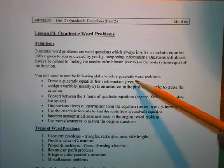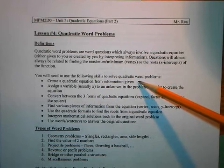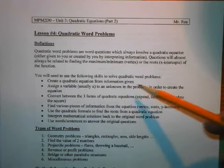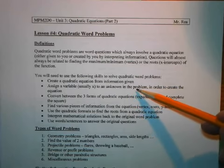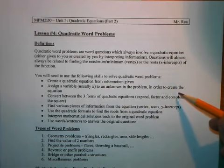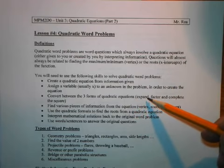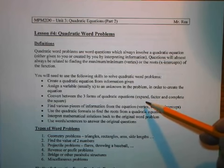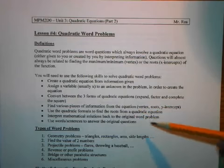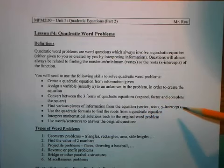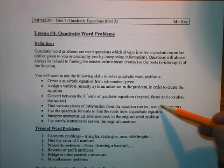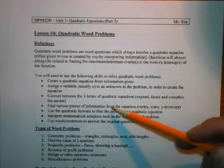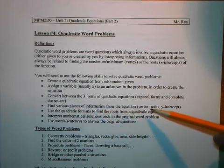The big new skill that you haven't had to do so far is be able to create a quadratic equation from the information that's given to you. And that involves assigning a variable before you can create the equation. You have to be able to convert the three forms of quadratic equations and find various pieces of information from the equation. Most important ones: vertex, roots, x-intercepts, and y-intercepts.